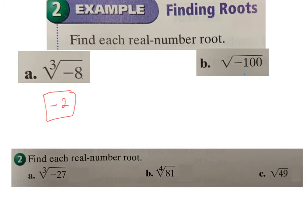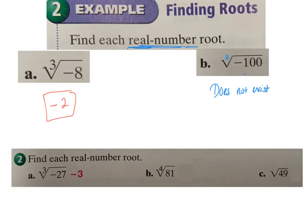For the square root of negative 100: 100 has a square root of 10, but it's negative. When no index is shown, the index is 2 (square root). Since we're looking for real numbers only, this does not exist. Answers for the practice: cube root of negative 27 is negative 3; fourth root of positive 81 is positive 3; square root of 49 is 7.